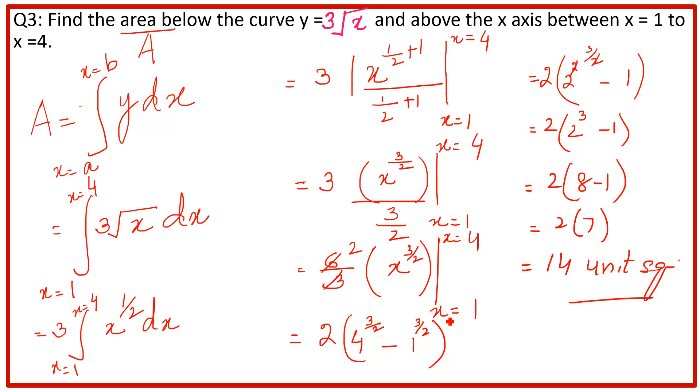तो answer है 14 unit²। यह हमने mathematically proof किया है। अब मैं आपको graph बनाकर बताऊँगी कि यह question क्या है — below the curve and above the x-axis का मतलब क्या होता है।